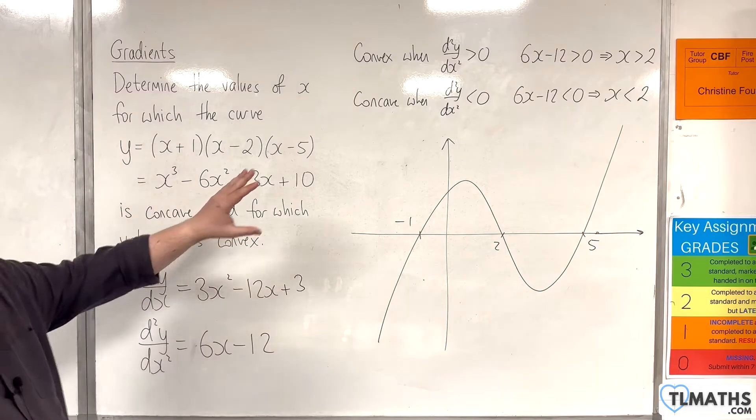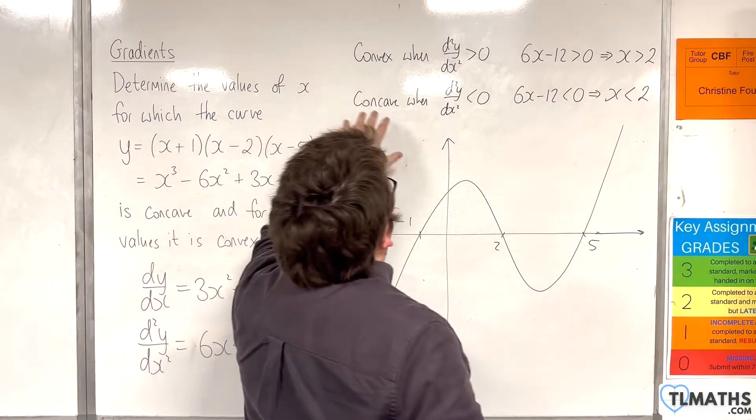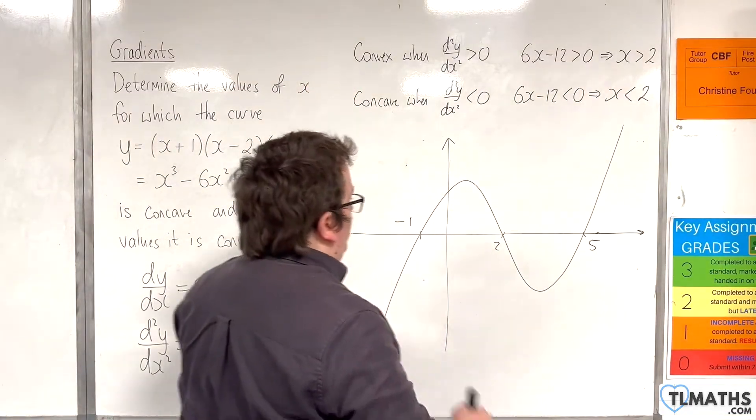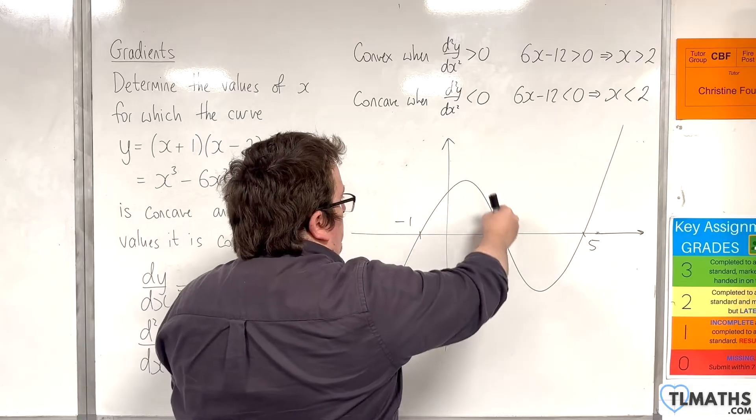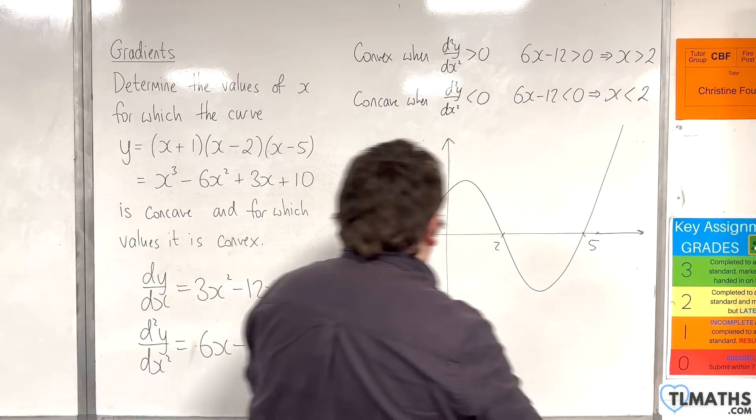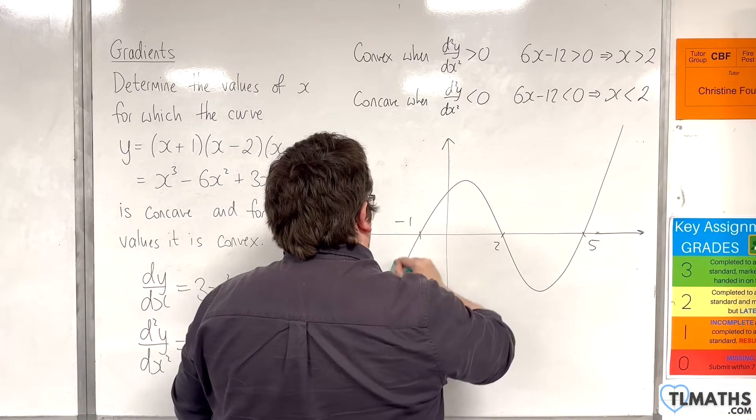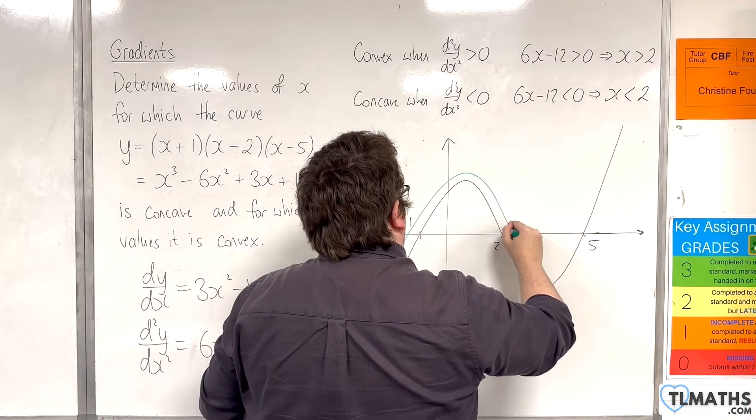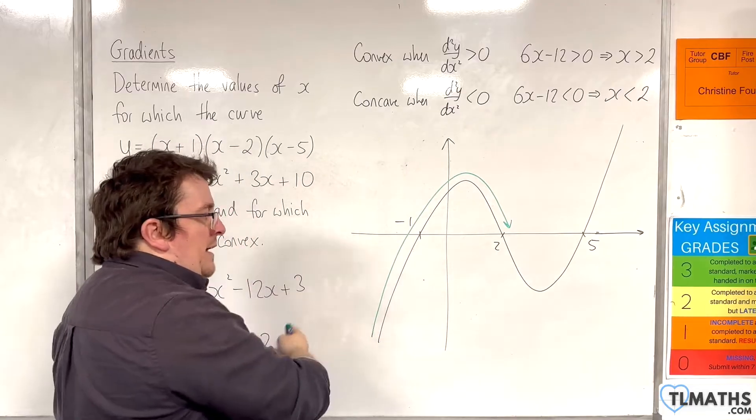Now, what we're seeing here is the curve is concave when x is less than 2. So, for this portion of the graph, the curve is concave. So, here we go, for that portion of the curve. So, if we're working our way around from left to right,